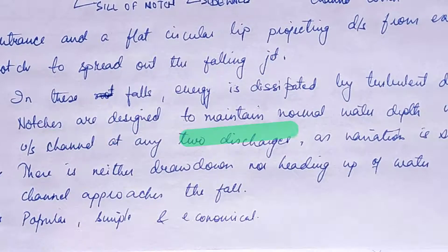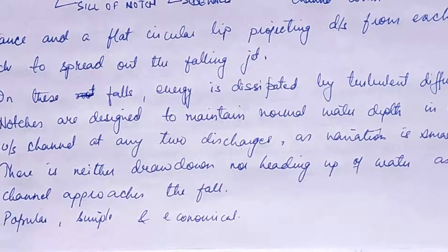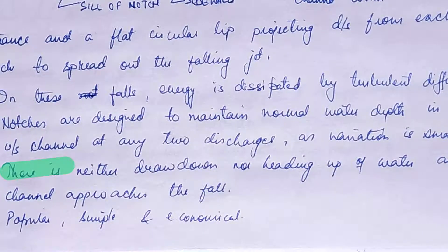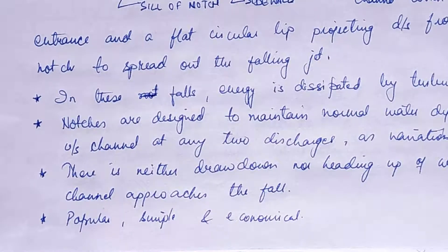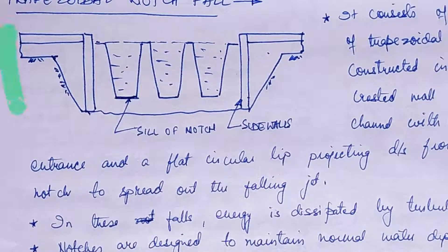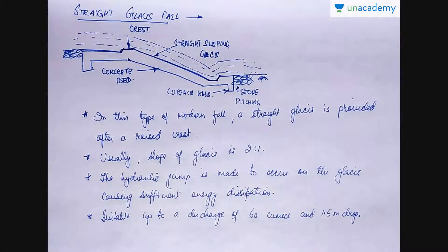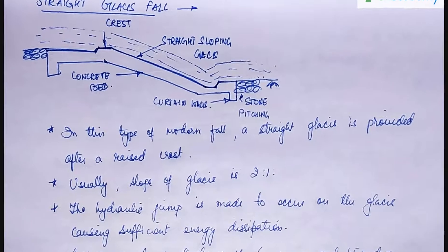The notches are designed to maintain normal water depth in the upstream channel at any two discharges, as variation in discharges is very negligible. There is neither drawdown nor heading up of water as the channel approaches the fall. It is a very popular, simple, and economical type of fall.